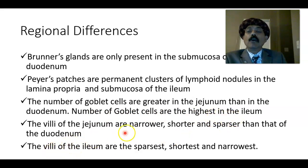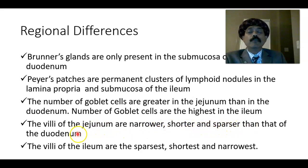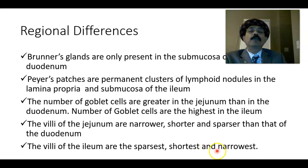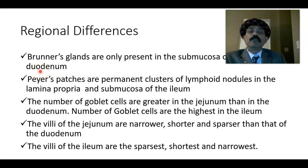The villi of the jejunum are narrower, shorter, and sparser than those of the duodenum. The villi of the ileum are the sparsest, shortest, and narrowest. So these are the regional differences between the duodenum, jejunum, and ileum.